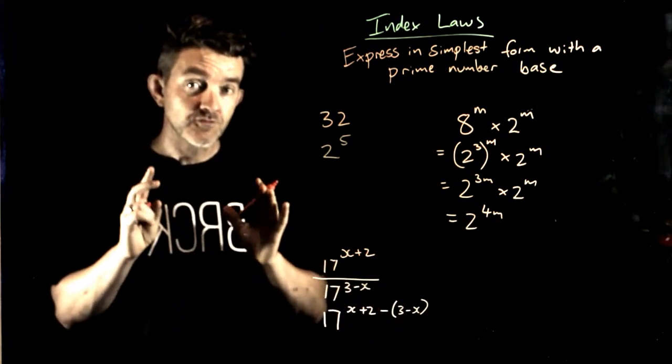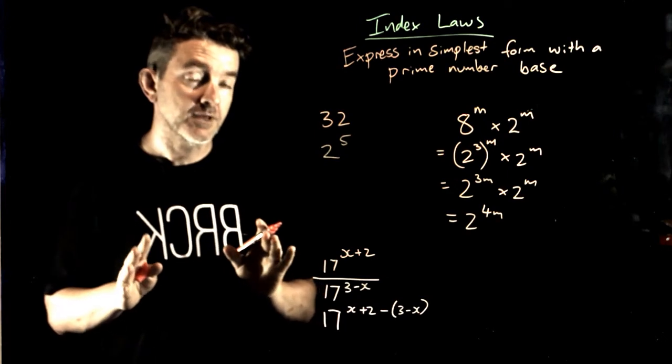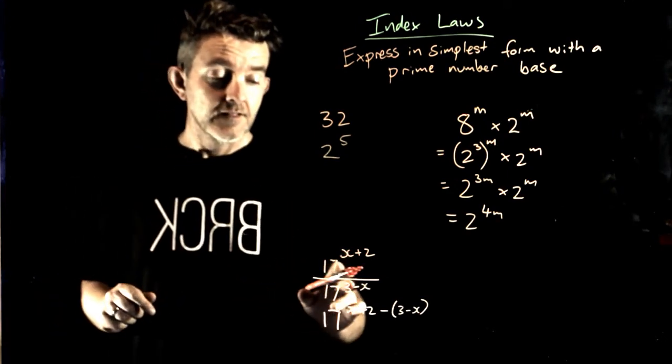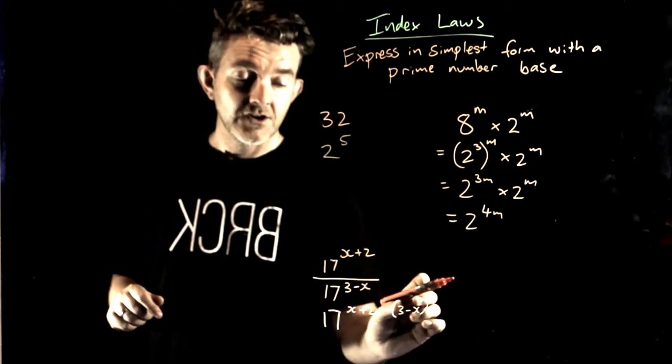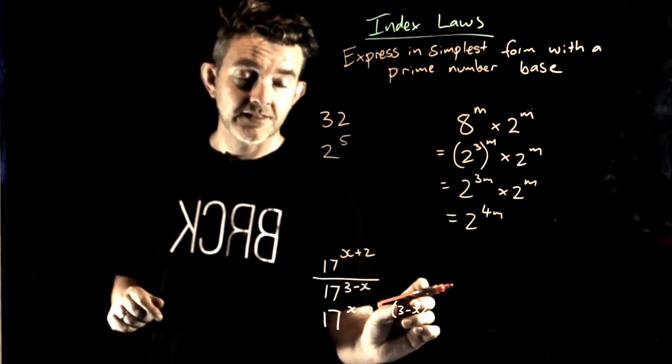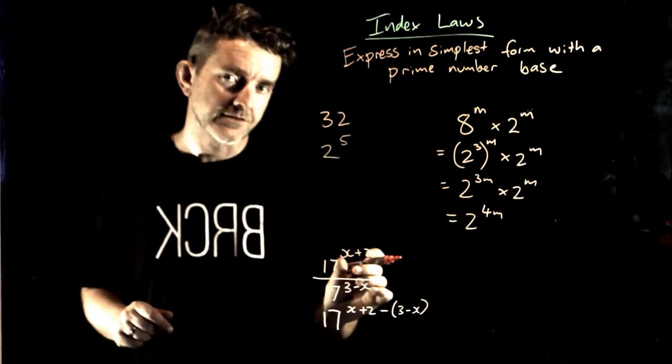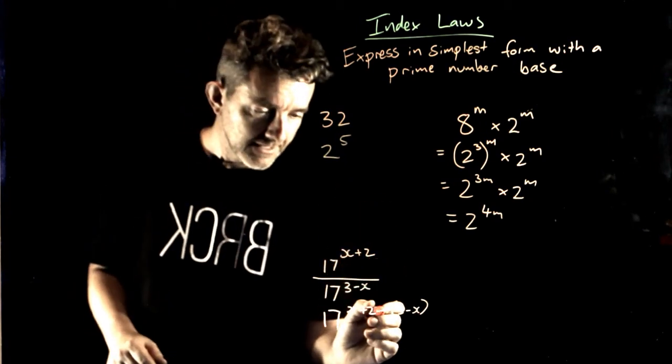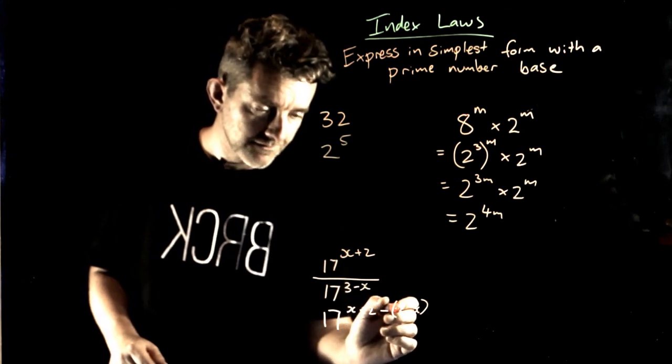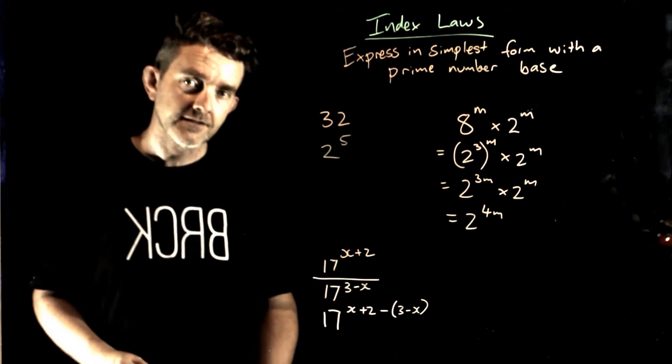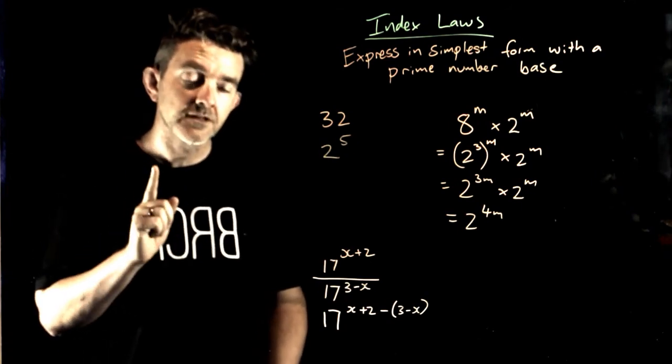The reason I put in brackets is we need to be really careful with signs here, negative and positive. This, I'm taking away not just the 3, I'm taking away the 3 take x. So the sign of both of those things is going to change. This negative out here is a negative applied to the 3 and a negative applied to the negative x. And we know what two negatives make when you multiply them together.